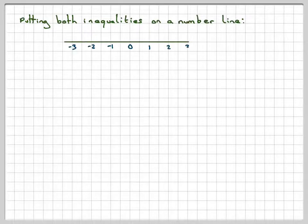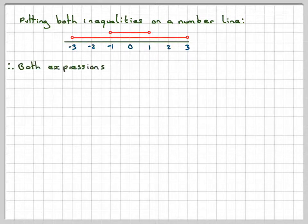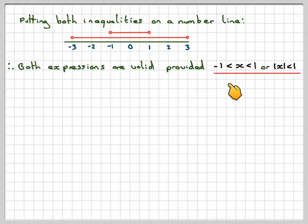So there's my number line. This is the one from minus 1 to 1, this is from minus 3 to 3. We want the bit which is common to both, which is just going to be from minus 1 to 1. Therefore, both expressions are valid, provided that x is from minus 1 to 1, or the absolute value of x is less than 1. These mean the same thing.